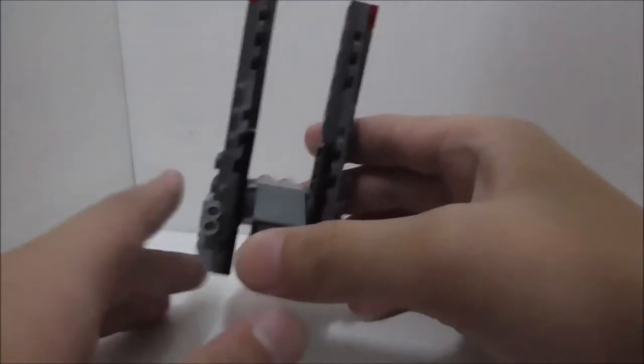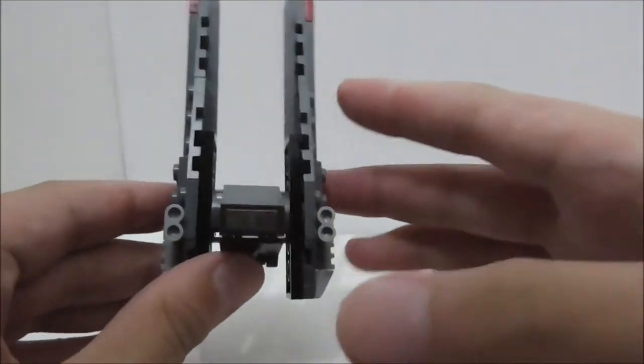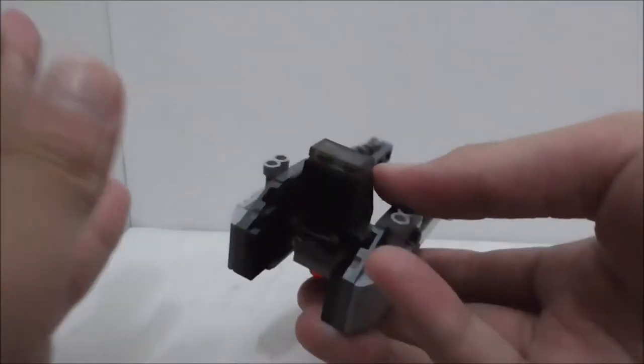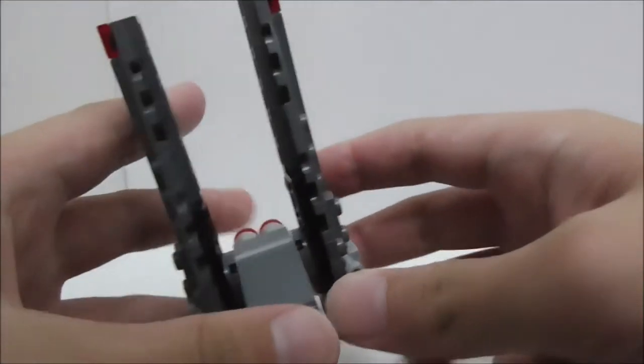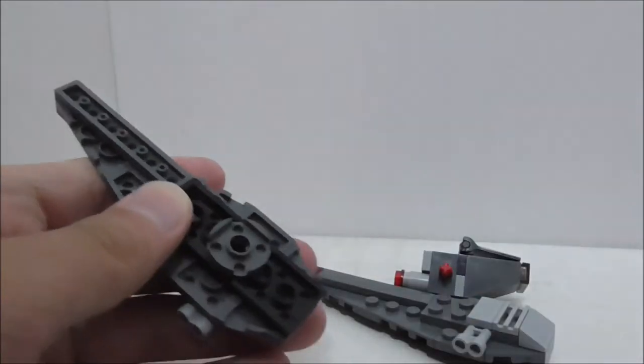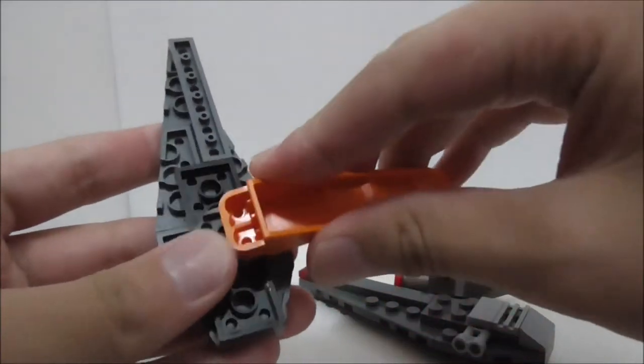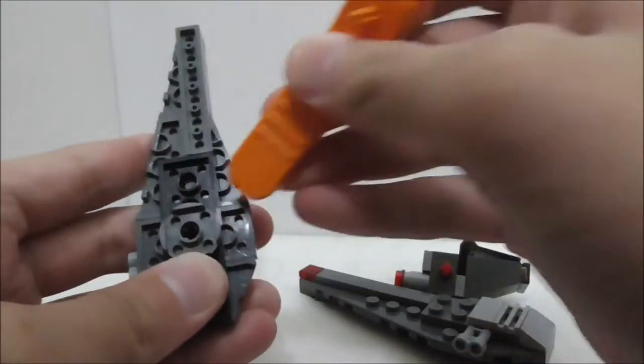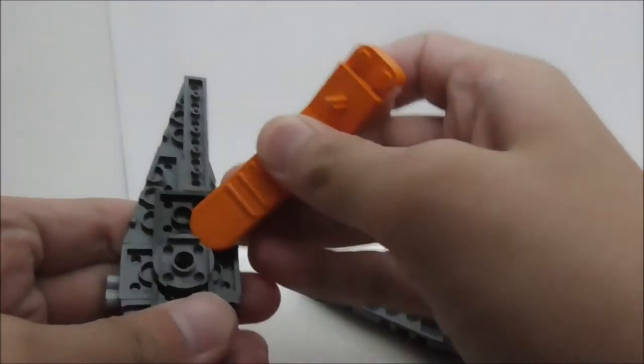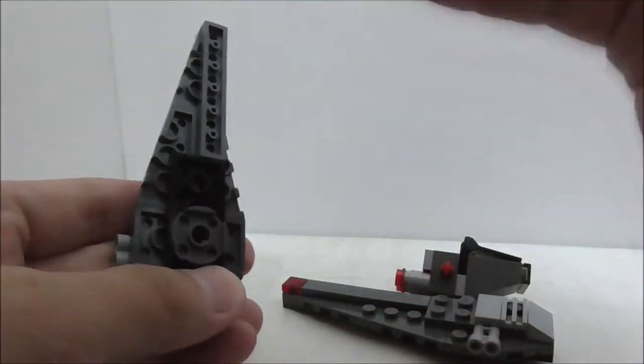Right now I'm going to show you how to remove all the stuff. First you have to remove the wings and you have to remove these round plate pieces. They are a little bit hard to remove so I'm going to speed up the video.